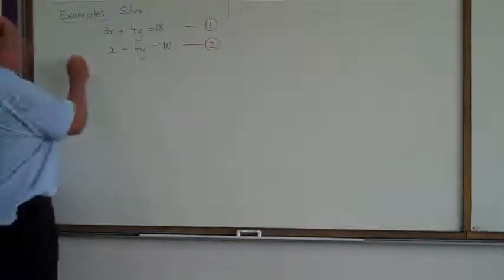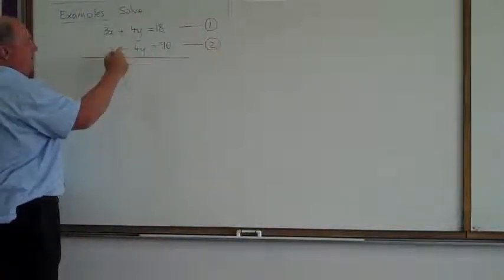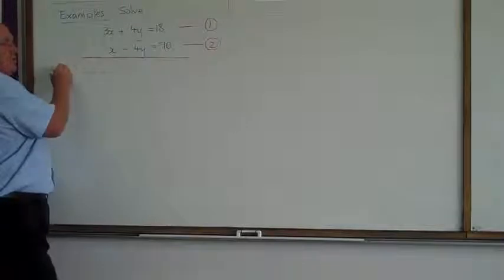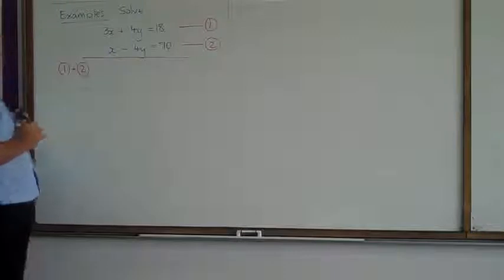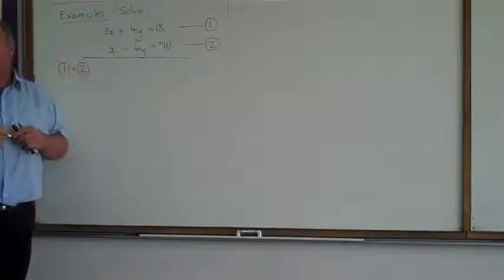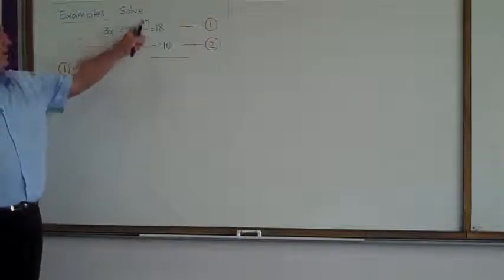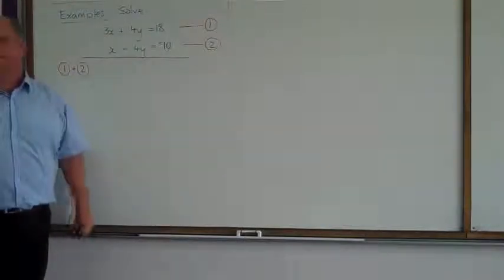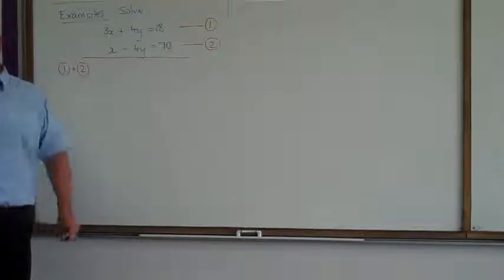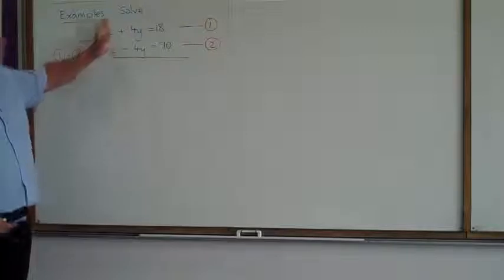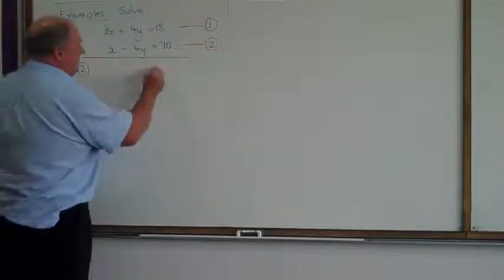This one's already set up for us nice and easy. If I add these two equations together, I'd add the x's, the 3x and the 1x together, make 4x. But if I add plus 4y to negative 4y, what happens? It disappears. It gets eliminated. That's the name of the method.